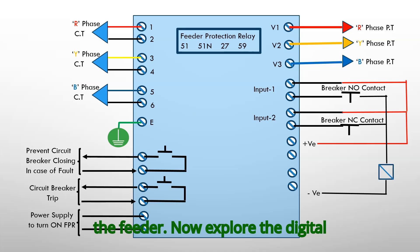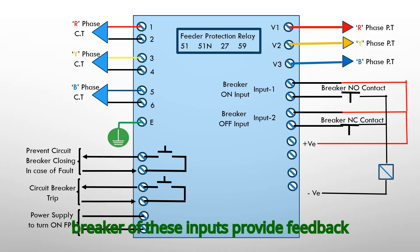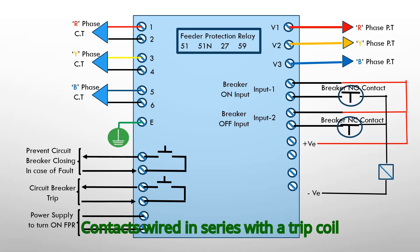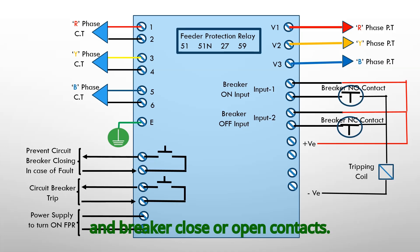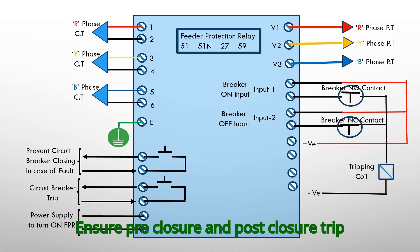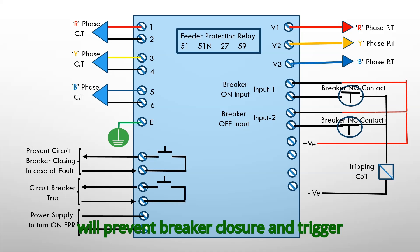Now we will explore the digital inputs to the relay. We have configured two critical inputs: breaker on and breaker off. These inputs provide feedback to the relay, confirming the breaker status. Contacts are wired in series with a trip coil and breaker close or open contacts, ensuring pre-closure and post-closure trip circuit supervision. If the relay does not receive these inputs, it assumes trip coil failure, prevents breaker closure and triggers an alarm.